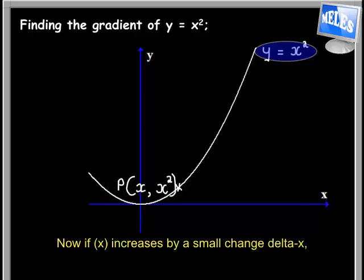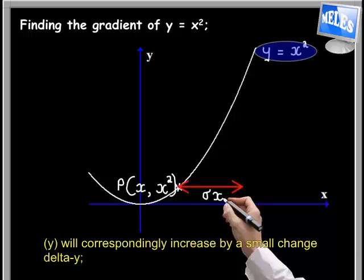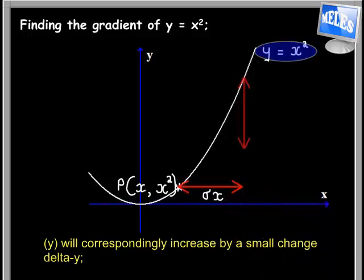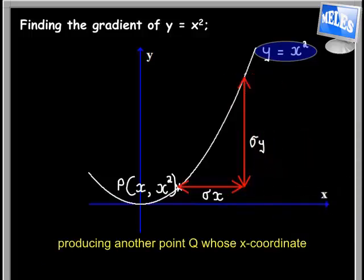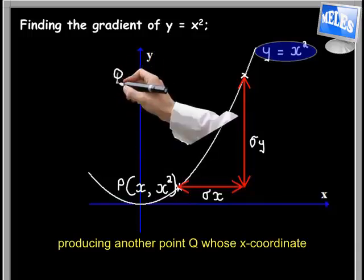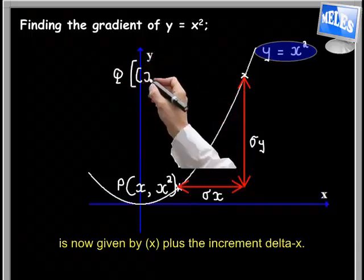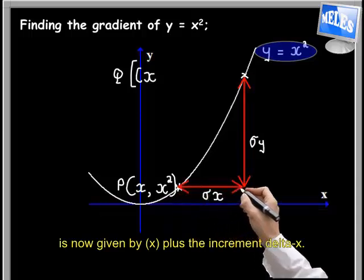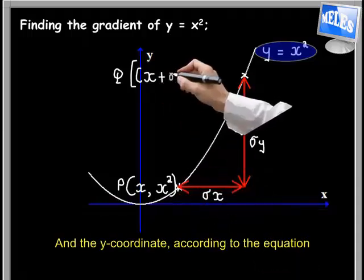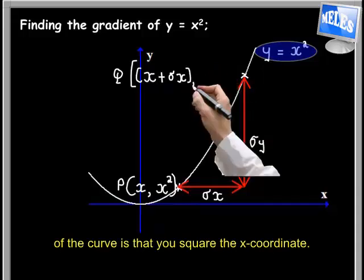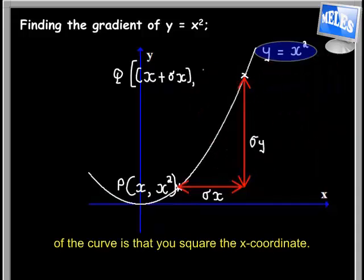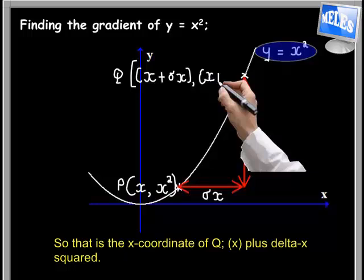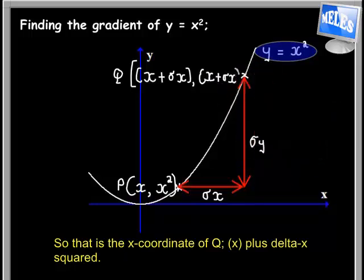Now if x increases by a small change delta x, y will correspondingly increase by a small change delta y, producing another point Q whose x-coordinate is now given by x plus the increment delta x. And the y-coordinate according to the equation of the curve is the x-coordinate squared, so that's x plus delta x squared.